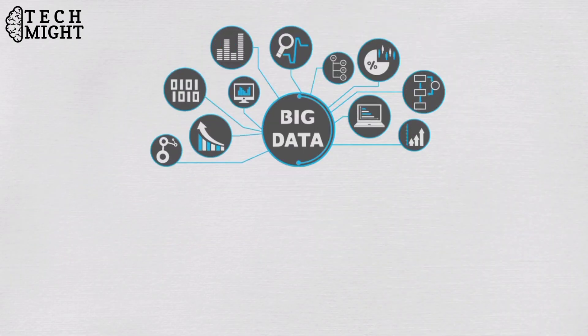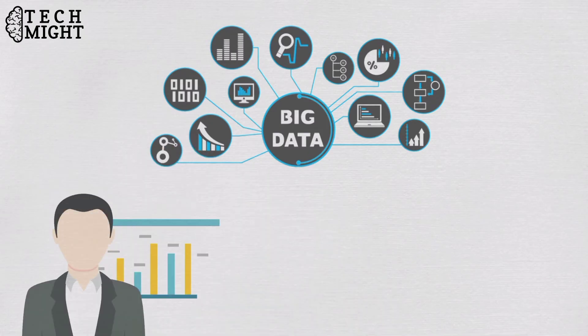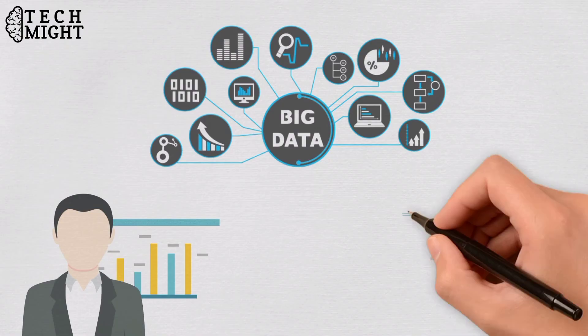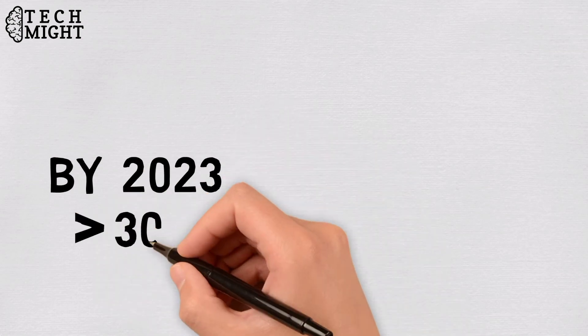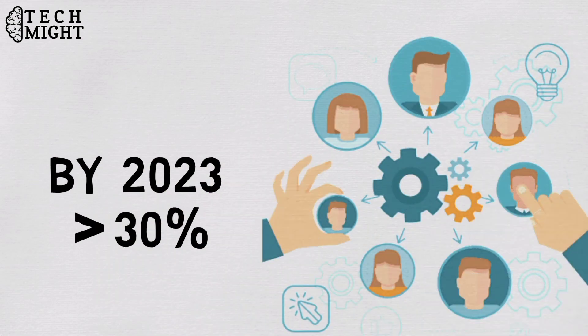Big Data also gives us interesting trends like decision intelligence, which provides a framework to help data engineers design, model, execute, and monitor decision models and processes in the context of business outcomes and behavior. In fact, by 2023, more than 33% of large organizations will have analysts practicing decision intelligence.